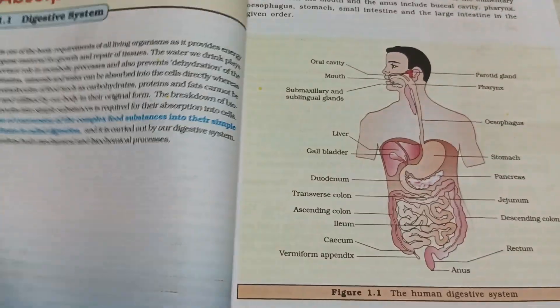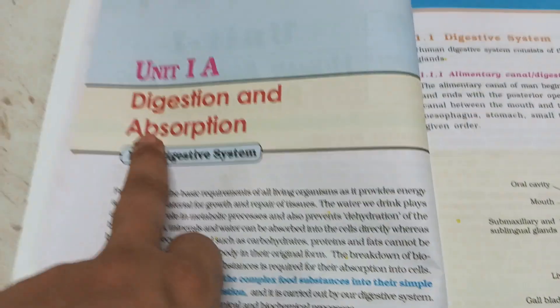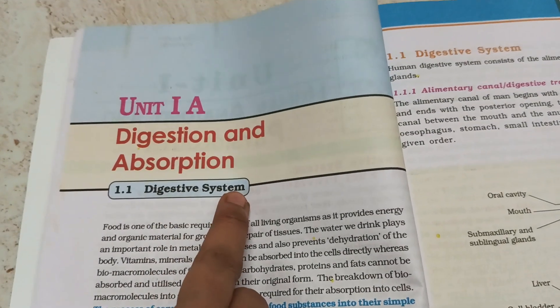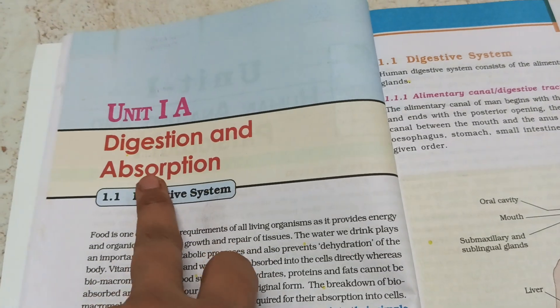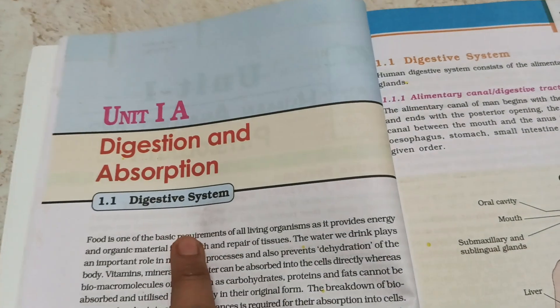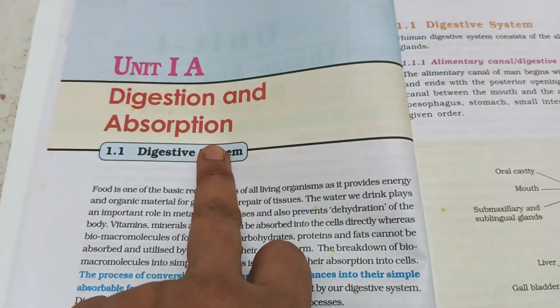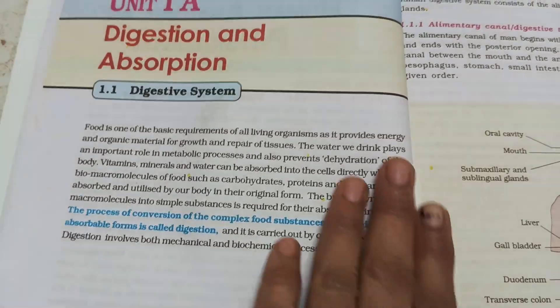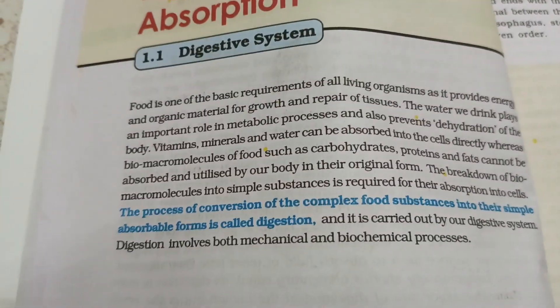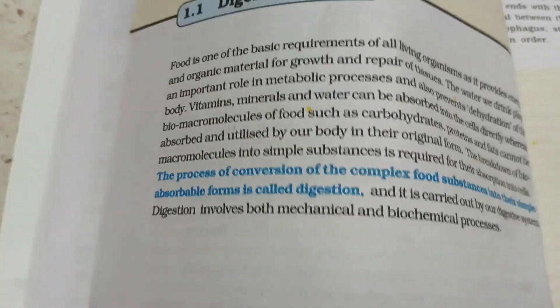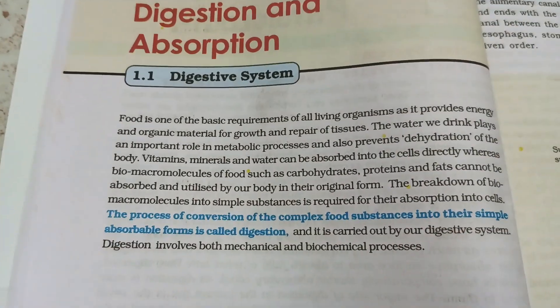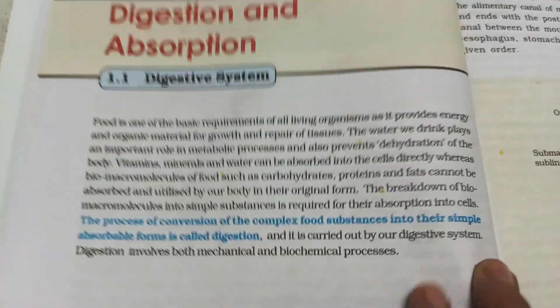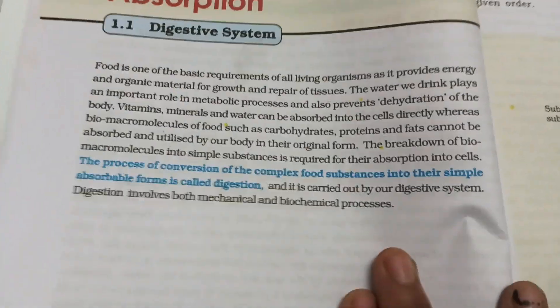This is the introduction to human anatomy and physiology, and the main topic is the digestive system — digestion and absorption. Food is one of the basic requirements of living organisms as it provides energy.